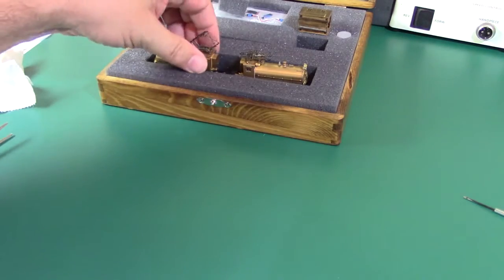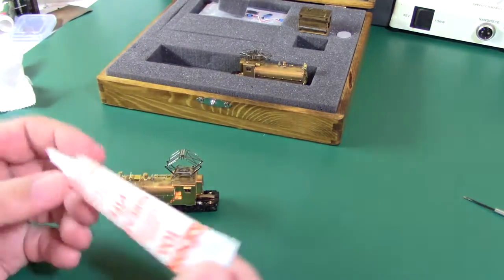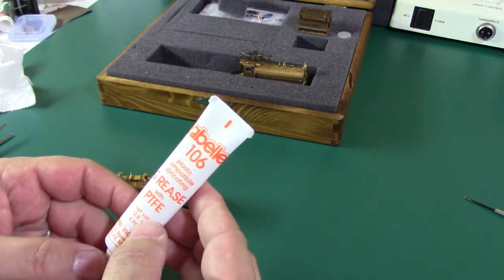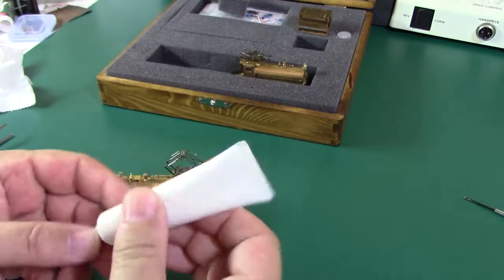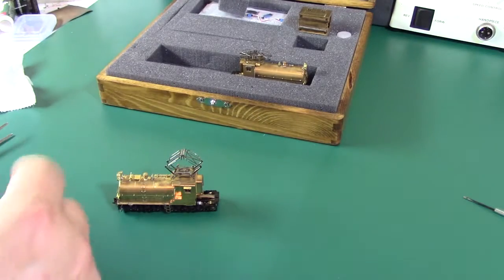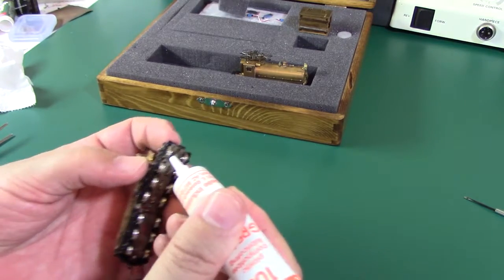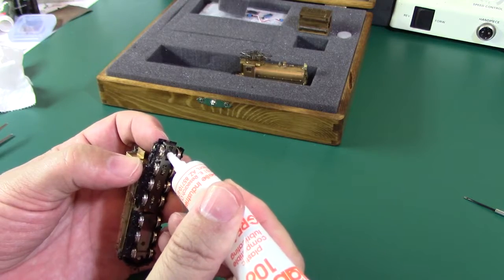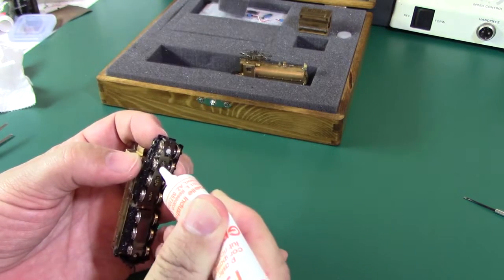Okay, we want to lubricate this now. Personally, I like this LaBelle white grease with some Teflon in it. I've always gotten good results from it. All we need to do is just put a little bit right on the gears. Just a dab.